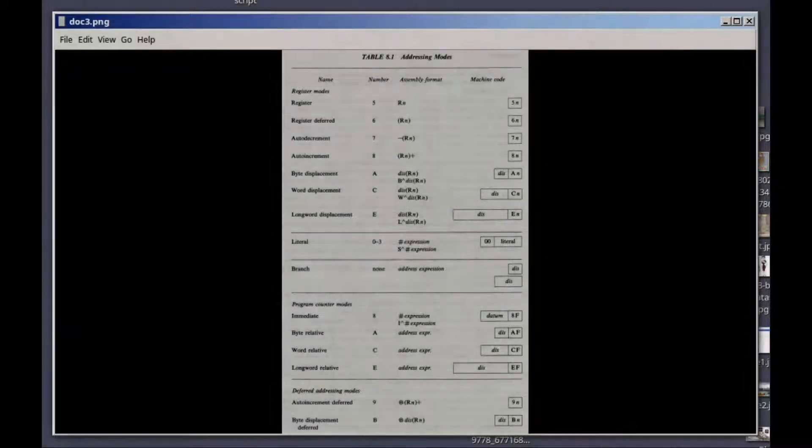Here are the addressing modes on a VAX-11. There's quite a few of them. Several of them are identical to the PDP-11. Some others are new, but there's the basic register mode. The operand is in the register, register deferred. The register points to the operand. Auto-increment, auto-decrement, byte displacement, word displacement, where word is 16 bits. Long word displacement, where that's 32 bits, displacement relative to a register. Literal is a number 0 through 3. The first two bits are 0, 0. Therefore, it's a literal.